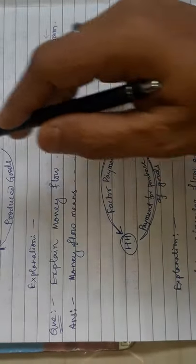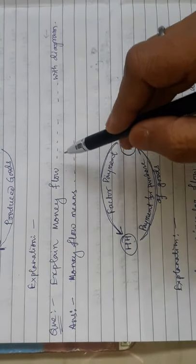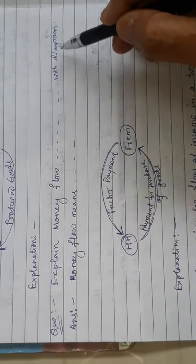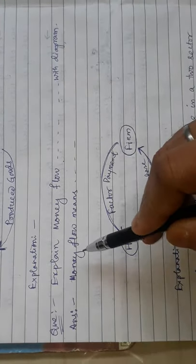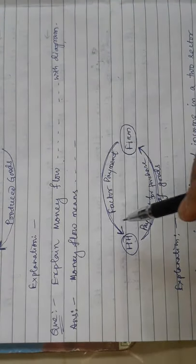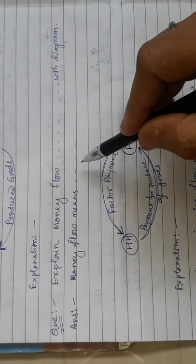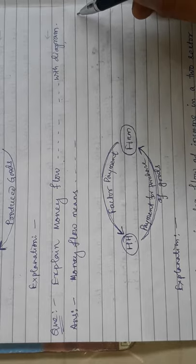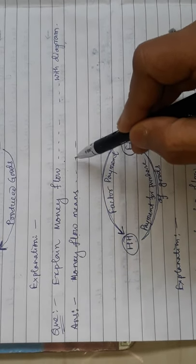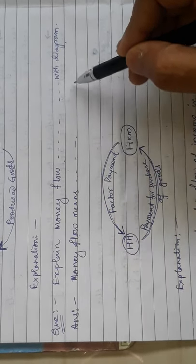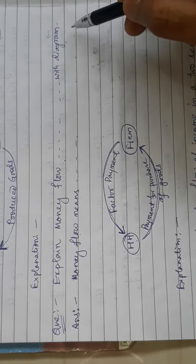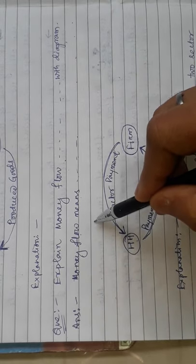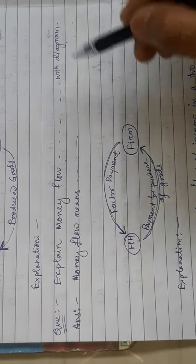Another question is: explain money flow with the help of a diagram. Money flow means the flow of money among different sectors of an economy. A simple two-sector economy is comprised of the household sector and the firm sector.